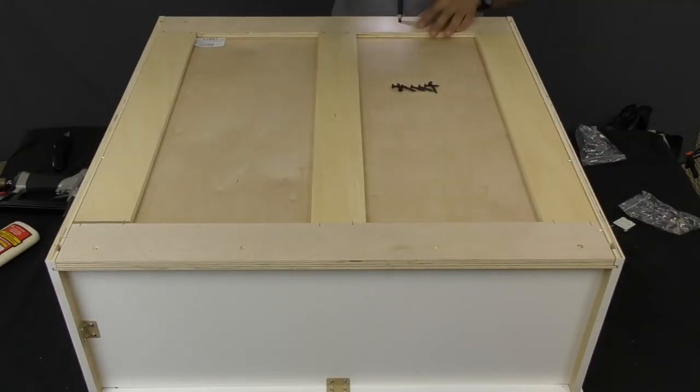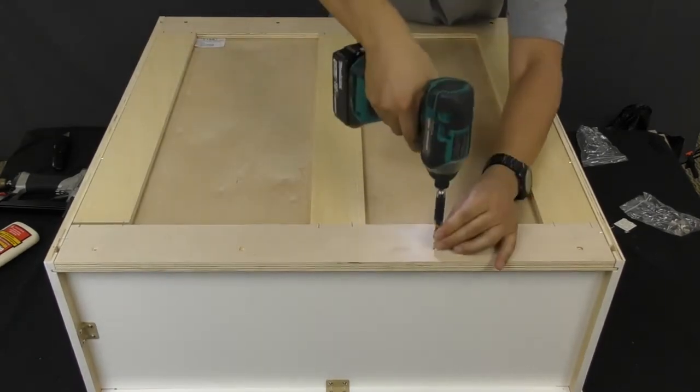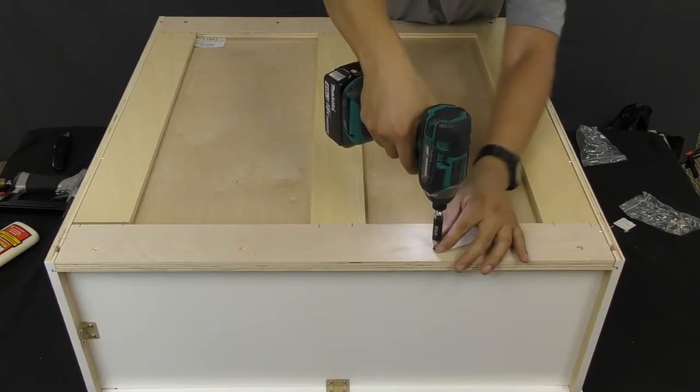Afterwards, you'll attach the back panel to the top and bottom panels using the inch and three-quarter wood screws that are included. Put them in the pre-drilled holes and screw them in.